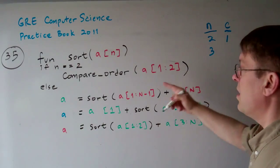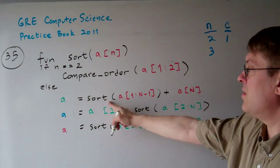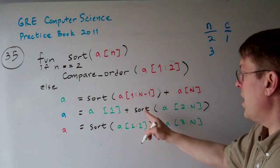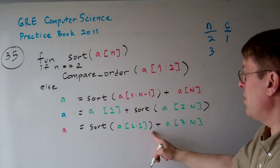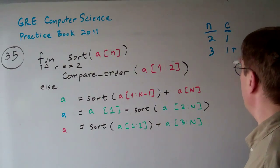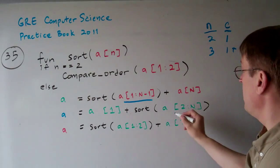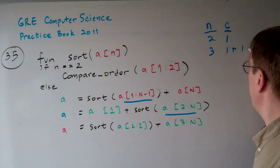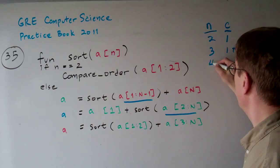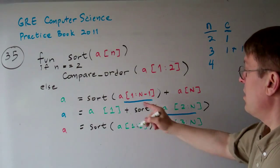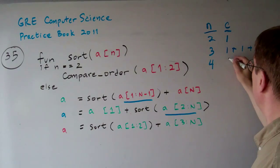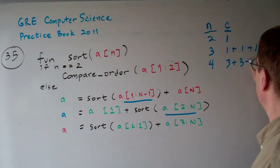If n equals three, it's the same as sorting two numbers twice — one comparison for the first n minus one sort, one for the last n minus one sort, and one for the final two-element sort. So C(3) equals 1 + 1 + 1 = 3. If n equals four, each of the two recursive calls handles three elements, plus the final two-element sort. So C(4) = 3 + 3 + 1 = 7.